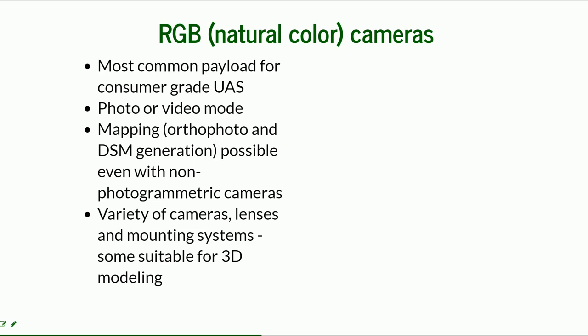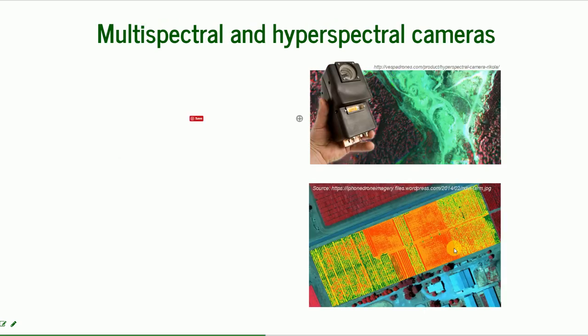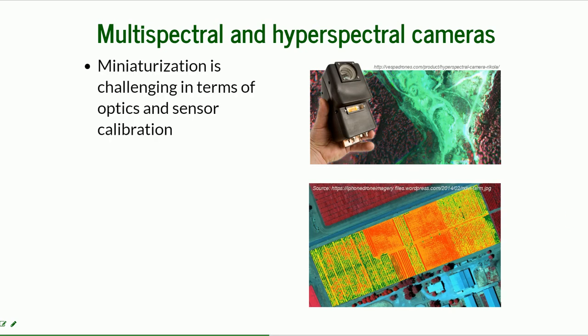Some camera configurations are more and some are less suitable for 3D modeling. Here we have a picture of one camera mounting with a gimbal that can take oblique imagery. You can see how an RGB photo looks — this is one we took at Kitty Hawk Beach — it's just a regular photo.